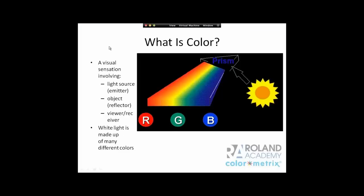What is color? Color requires a visual sensation involving three things: a light source, an object, and a viewer — sometimes called the emitter, the reflector, and the receiver. Standing outside looking at a tree: the sun illuminates the tree, the tree is the object, and our eyes are the receiver. White light — the sun — is made up of many different colors. You may have heard the mnemonic ROYGBIV: red, orange, yellow, green, blue, indigo, and violet.